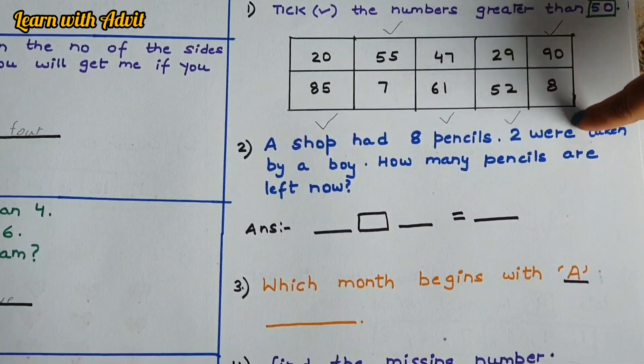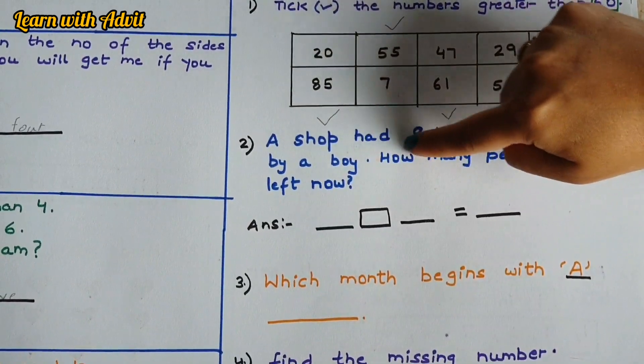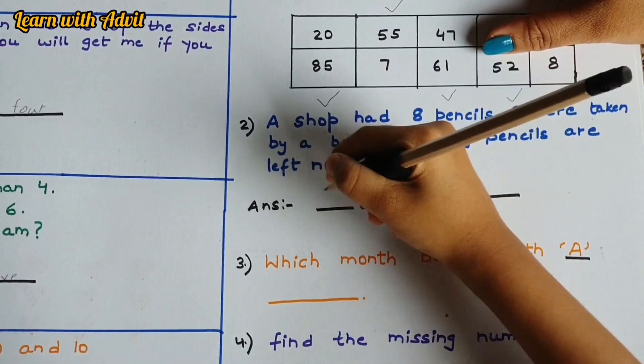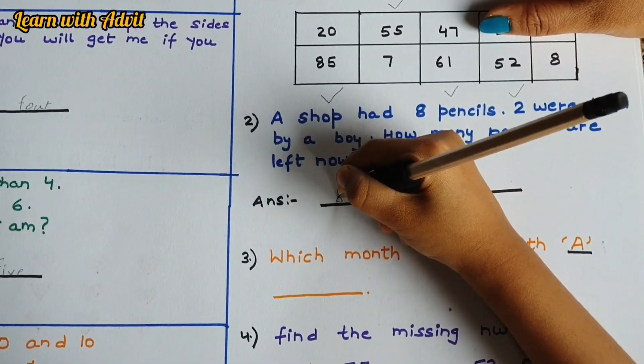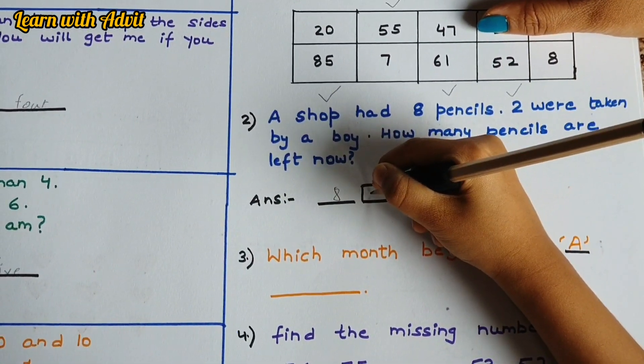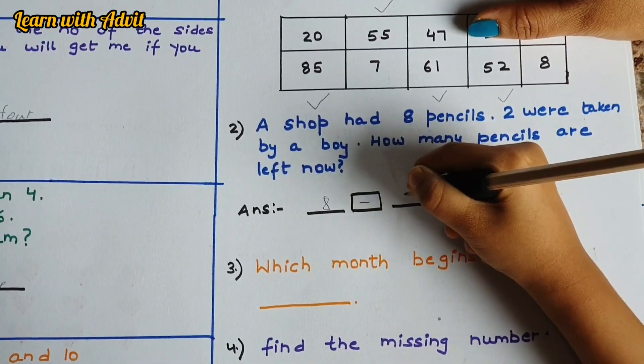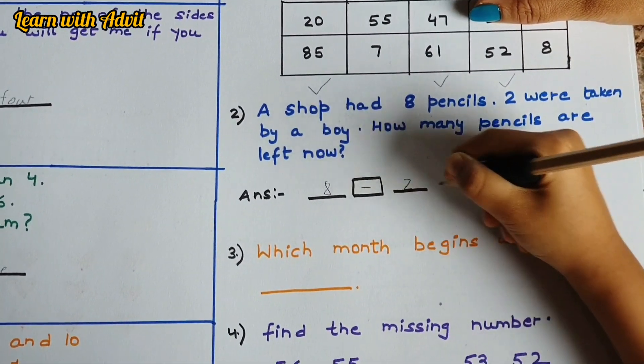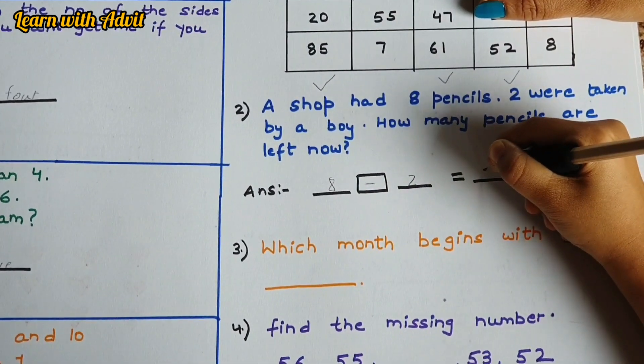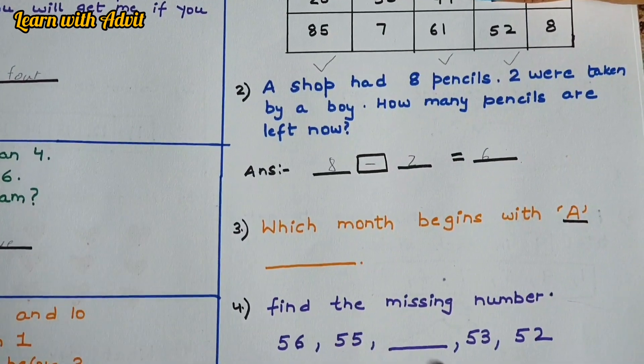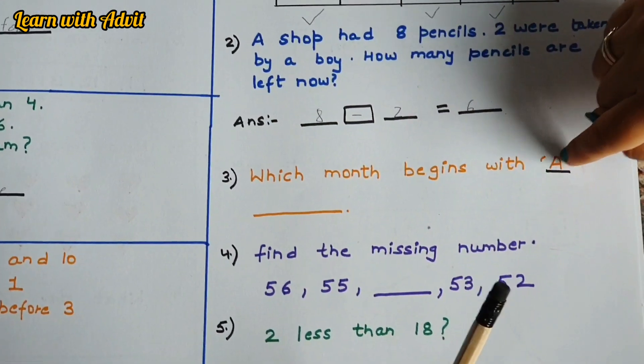A shop had eight pencils. Two were taken by a boy. How many pencils are left now? So you have to solve this. The shop had eight pencils. Which sign will you put? The boy took, yeah, this means he took two pencils away. So how many left now? Then the shop has six pencils now. Very good.